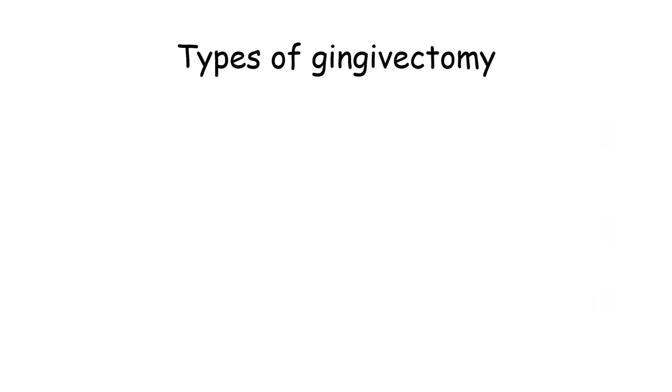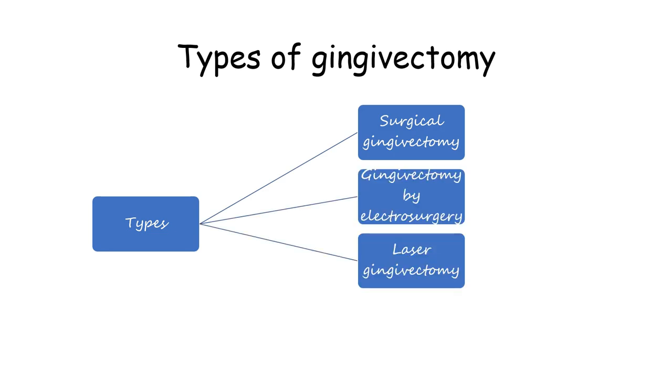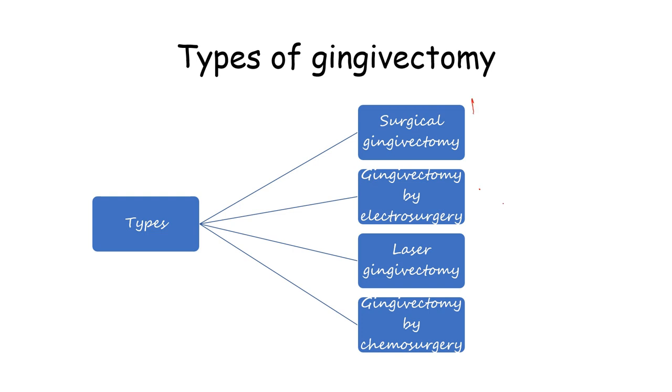Next is the types of gingivectomy. Once the case is selected, we will discuss the types. The most commonly used technique is surgical gingivectomy. Then comes gingivectomy by electrosurgery, laser gingivectomy, and lastly gingivectomy by chemosurgery. Surgical gingivectomy is the most important.